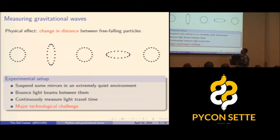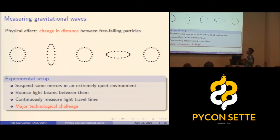The way to measure this is to take some mirrors, suspend them in a very quiet environment, send light between them, and measure the light travel time. This seems simple but has been a major technological challenge requiring many decades for this discovery.